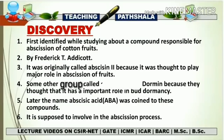First, we are going to see some important points regarding the discovery of ABA or abscisic acid. Abscisic acid is supposed to be the stress hormone and was first identified and chemically characterized by Frederick T. Adicott. It was first identified while studying the compound responsible for the abscission of cotton fruits.